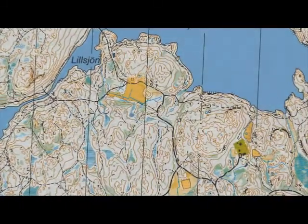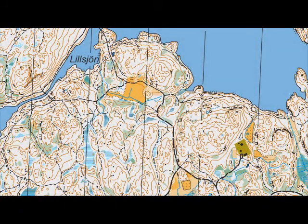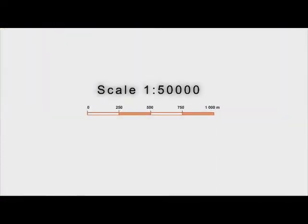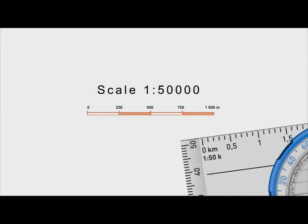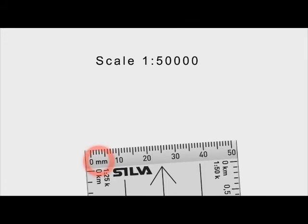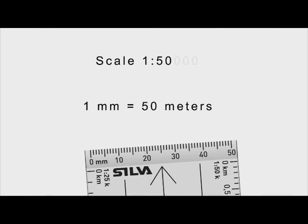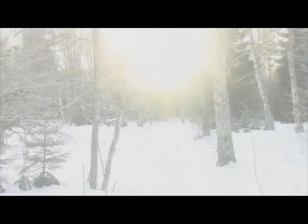A map is a scaled-down model of reality, so it's important to understand how it represents distance. Using the map scale, you can measure distance with the compass baseplate. If your compass lacks the corresponding scale, use a regular metric ruler. Drop the last three digits from the scale, and this is the number of metres on the ground represented by one millimetre on the map. So on a one to fifty thousandth scale map, one millimetre represents fifty metres.